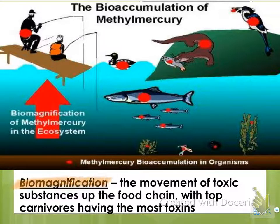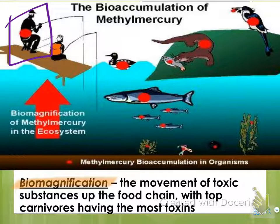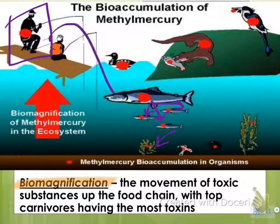Biomagnification is definitely a term you need to know. It's the movement of toxic substances up the food chain, and the issue is that top carnivores have the most toxins. Unfortunately, as humans, we are those top carnivores. The red dots in this picture symbolize the amount of mercury. The little fish ate the plant, which has a little mercury. Now the big fish eats all those little fish and gets all of that mercury. So when we catch the big fish, we get all the mercury it consumed from the smaller fish and the plant. This is why there are limits on the amount of fish you're supposed to consume, and even why pregnant women aren't supposed to eat as much fish because of the mercury content.